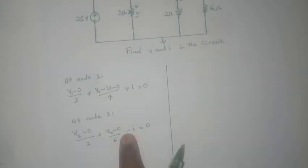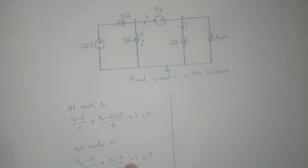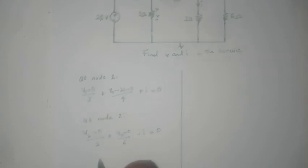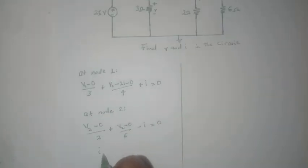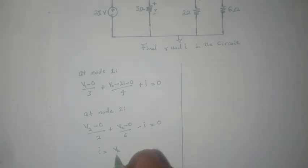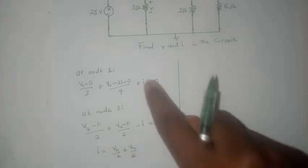So from here we can say that making i1 subject of the formula, we can say i1 is equal to v2 over two plus v2 over six. So that is what i1 is, then we can go ahead and substitute it here.